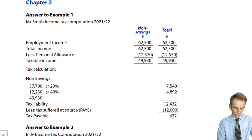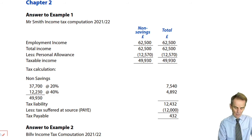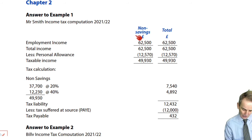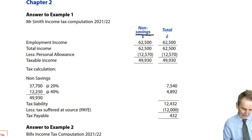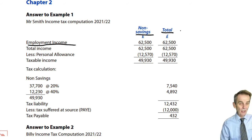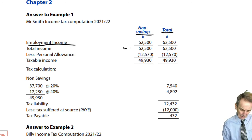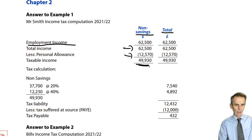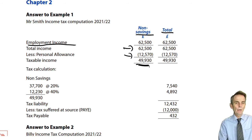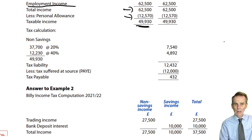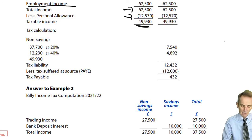Let's review the answer to example one. Total income of £62,500 less the personal allowance gives taxable income of £49,930 — all non-savings. Since £49,930 exceeds £37,700, we split it: the first £37,700 at the basic rate, and the remainder in the higher rate band. The rates and allowances information is provided in these notes — it is worth having a copy to hand so you can reference it across examples.